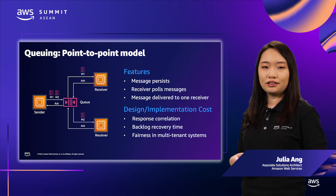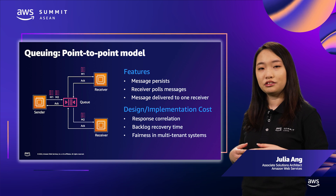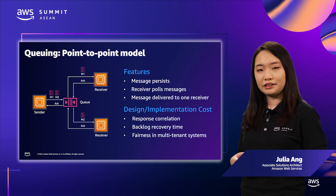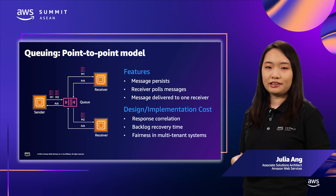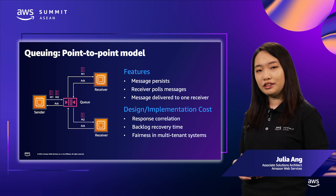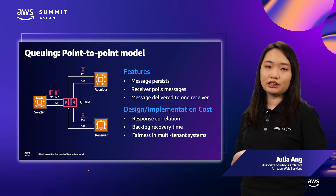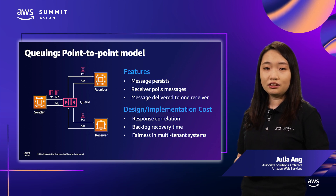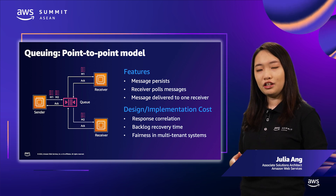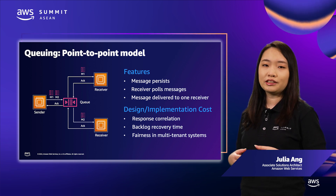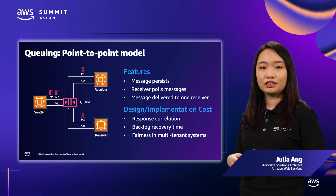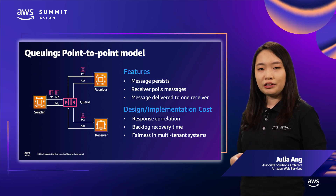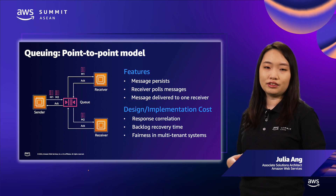Let's look at the new design considerations this pattern introduces. First, after a message is processed, a response needs to be sent back to the sender, so we need an identifier to correlate a response to the message that generated it. Second, if the receiver encounters a brief outage, recovery takes longer because it has to clear the messages waiting in the queue. To solve this, you can temporarily increase the number of receivers to catch up.